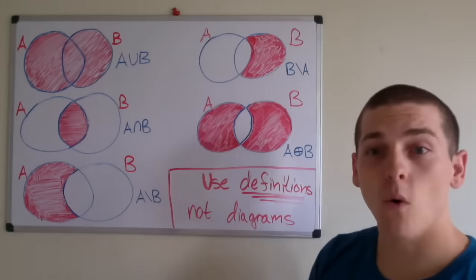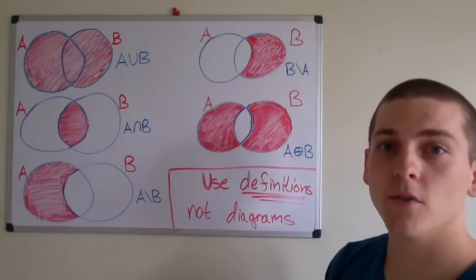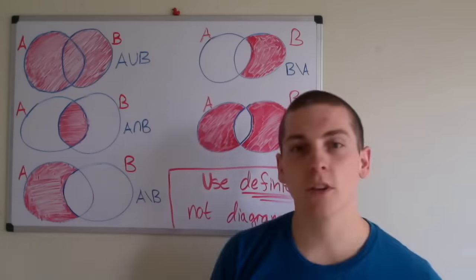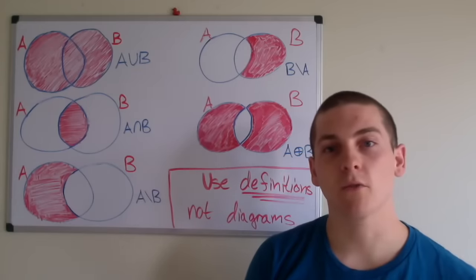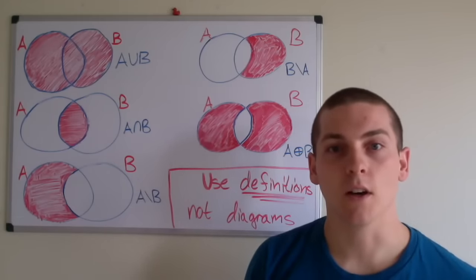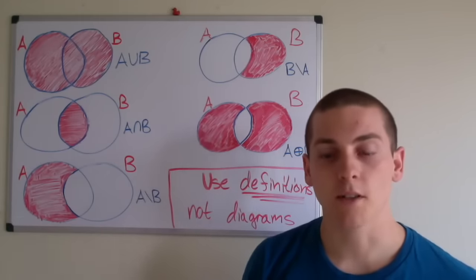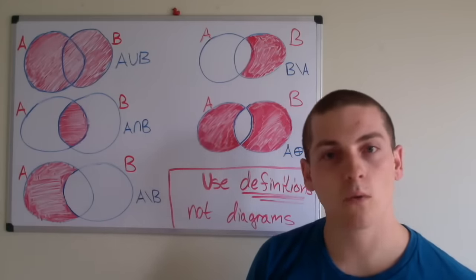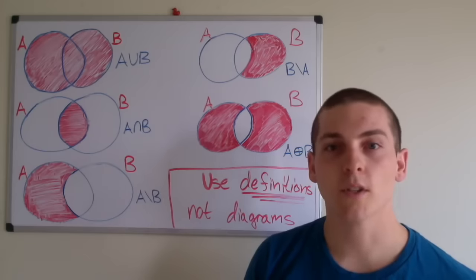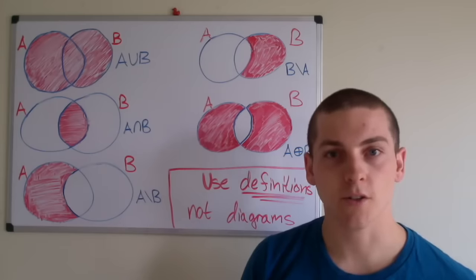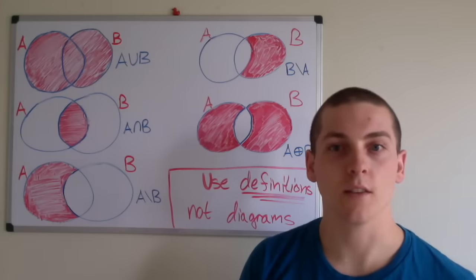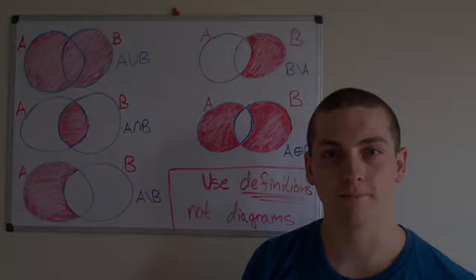And finally, the symmetric difference of A and B is the union of A minus B and B minus A — we take those two regions and take the union, which is why there's no overlap between the two. Now, this is a really good way to familiarize yourself with set operators, however don't rely on it. You should really focus on the definitions as it will help you out in the long term.